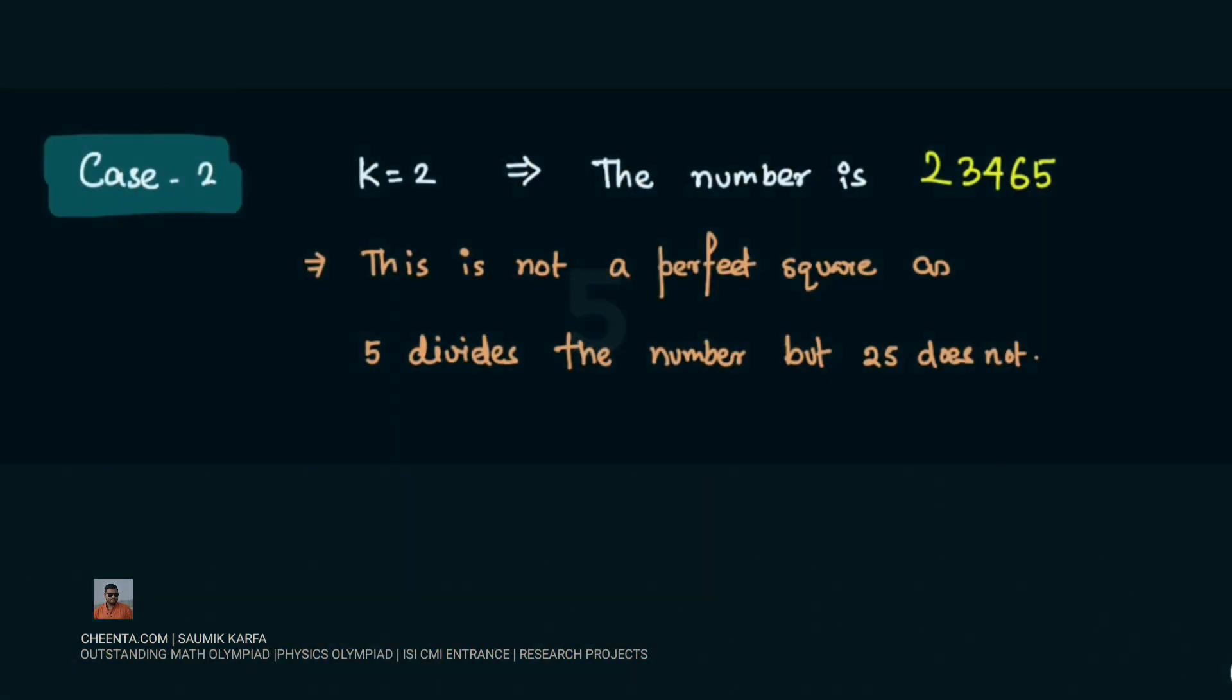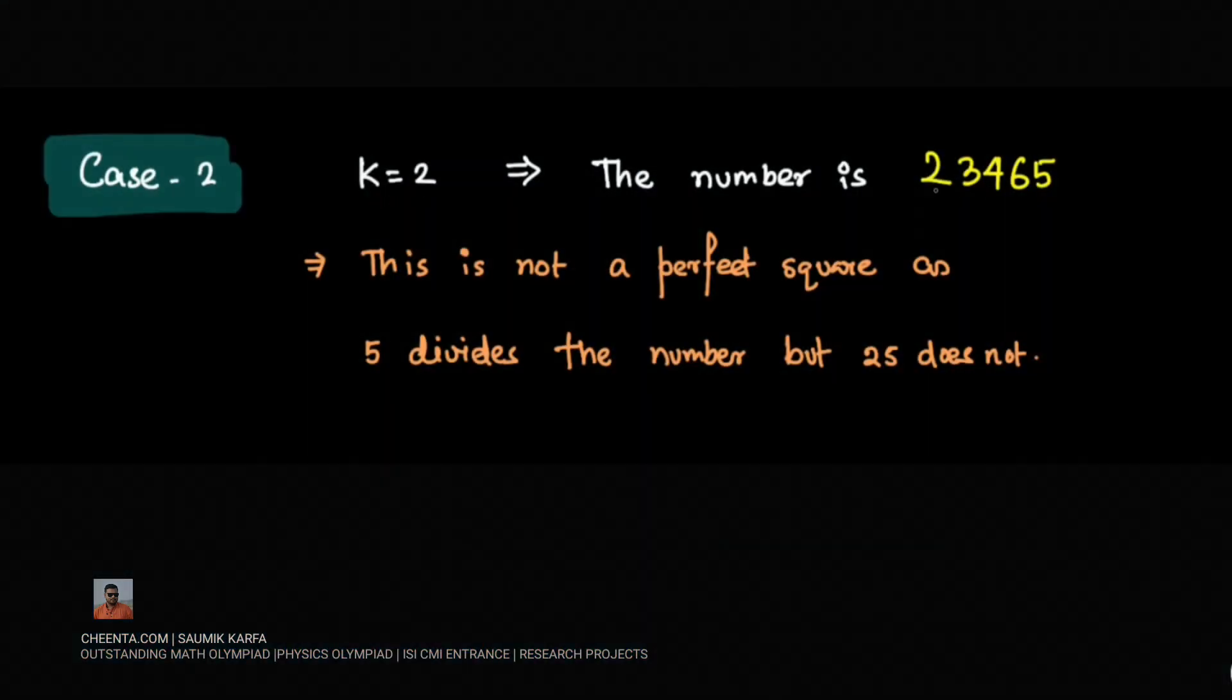In the next case, if k is 2, the number becomes 23465. This will not be a perfect square because every factor of a perfect square repeats in the prime factorization. As 5 is a factor of this number, 5 should be twice there. 25 should also divide this number, but that's not the case, so this is also not a perfect square.